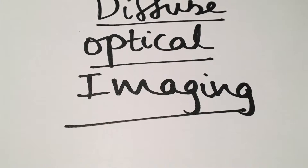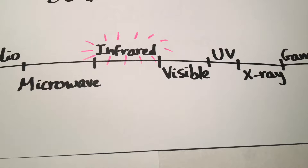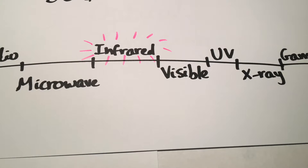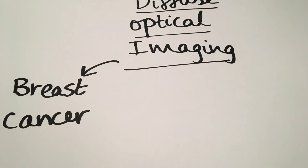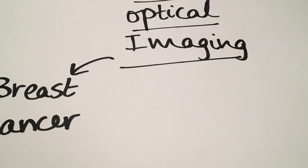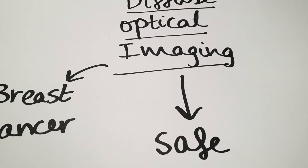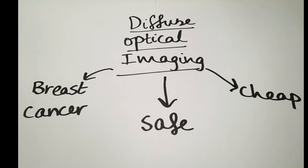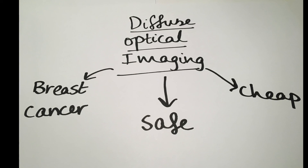So overall, diffuse optical imaging uses infrared light to produce images and is particularly effective in the diagnosing of breast cancer. DOI is useful because it's cheap and safe, since the only possible harm is heating caused by the infrared light, but these effects are essentially negligible since they're so small. This is why diffuse optical imaging is becoming more prevalent in hospitals.